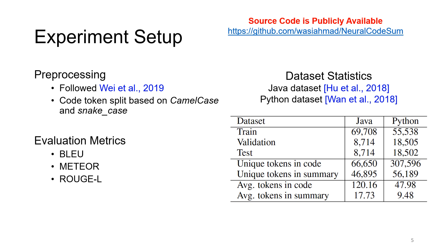We conduct experiments on two well-studied datasets in Java and Python programming languages collected from GitHub. The datasets are pre-processed following prior work. In an additional pre-processing step, we subtokenize the source code tokens based on camel case and snake case, which improves summarization significantly. We use BLEU, METEOR, and ROUGE-L scores as evaluation metrics.